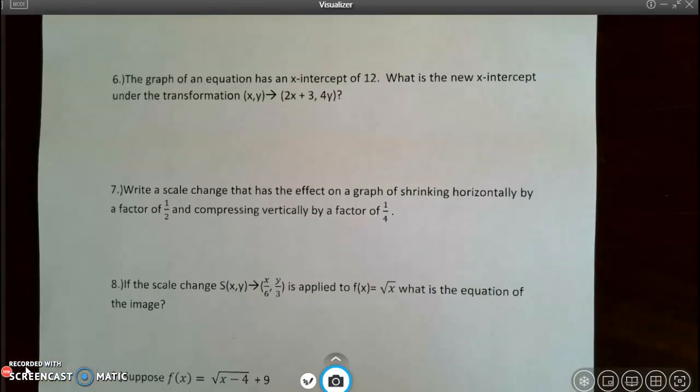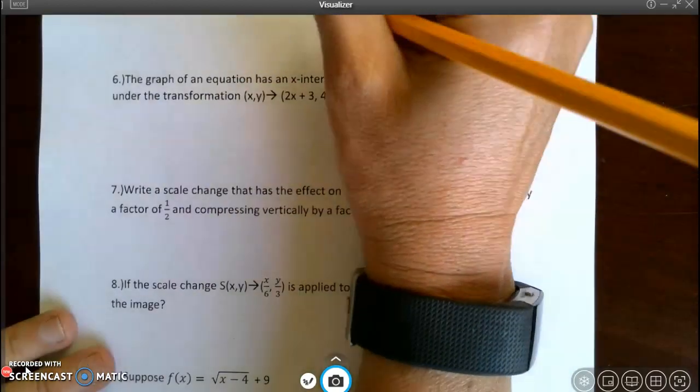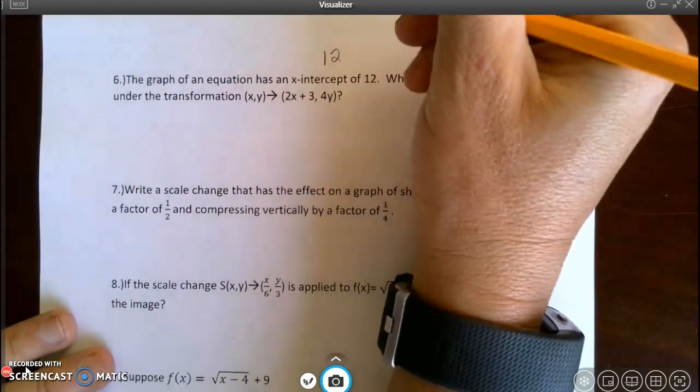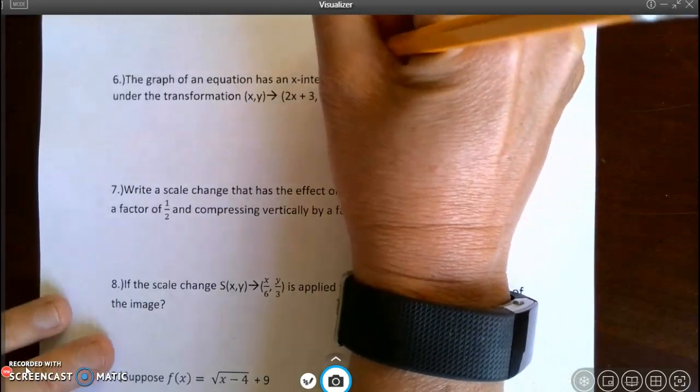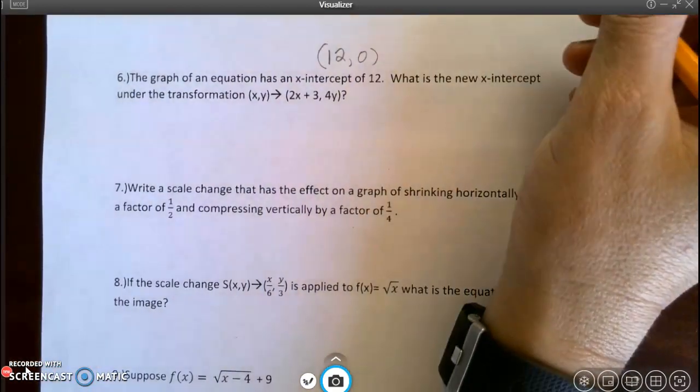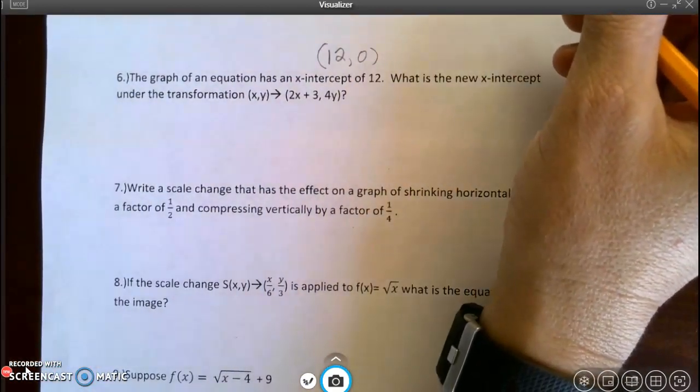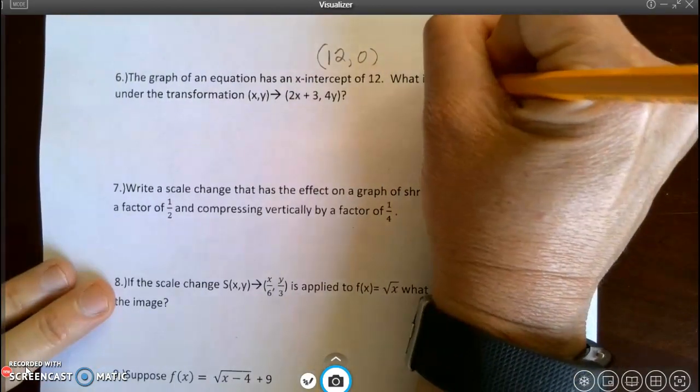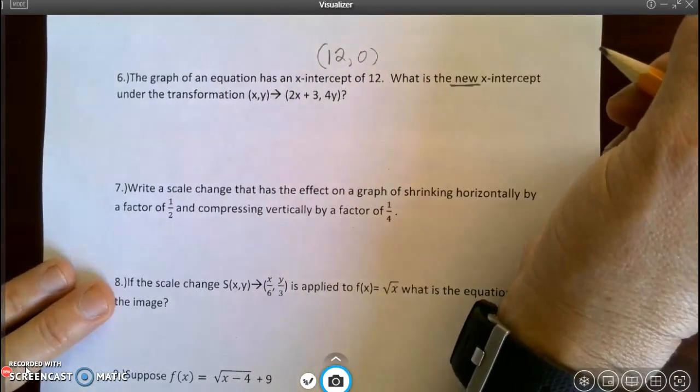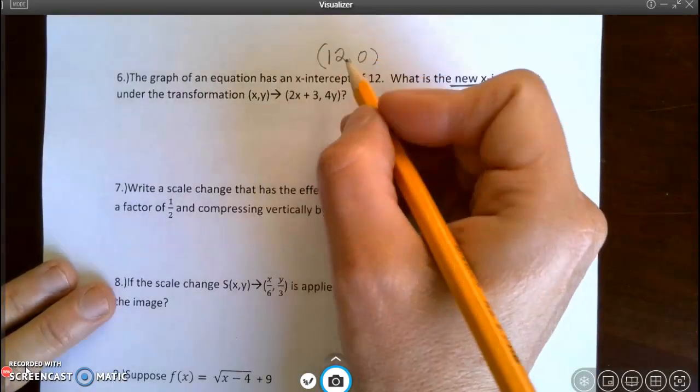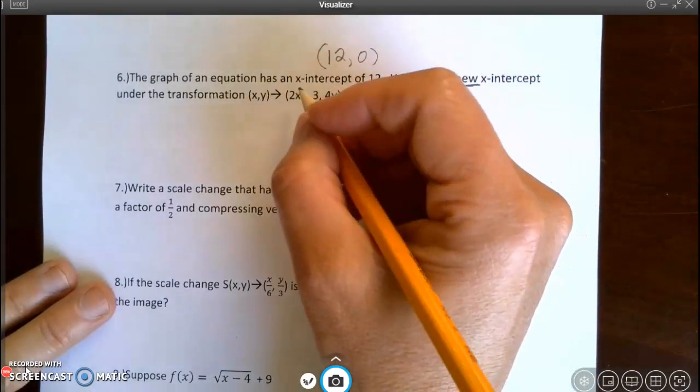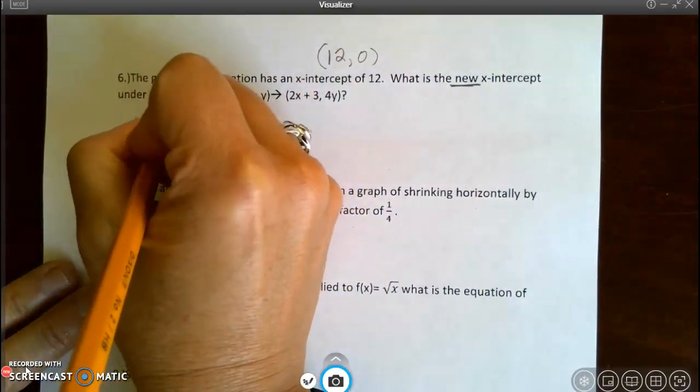It says that the graph of an equation has an x-intercept of 12, 0. That would be 12. I'm sorry, an x-intercept of 12, which is the ordered pair (12, 0). What is the new x-intercept under this transformation? Well, the transformation says, so I'm starting with (12, 0). And then I'm applying the transformation 2x plus 3 and 4y.